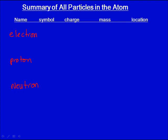These have symbols: e negative, p plus, and n zero. They have charges. The electron has a relative charge of minus one, the proton has an equal but opposite charge of plus one, and the neutron has no charge.